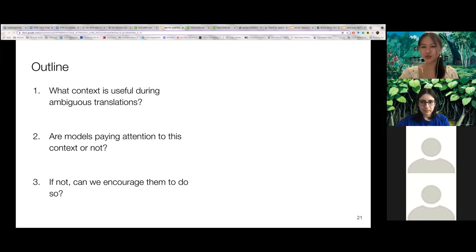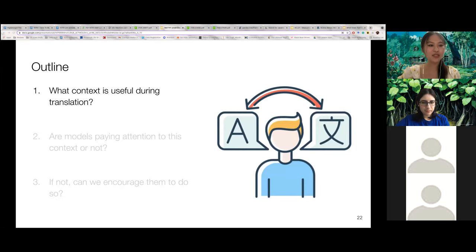And so we asked ourselves the following research questions in this paper. One, in context-aware translation, what context is useful to disambiguate hard translations, such as ambiguous pronouns or word senses? And two, are context-aware machine translation models paying attention to the relevant context or not? And three, if not, can we encourage them to do so?